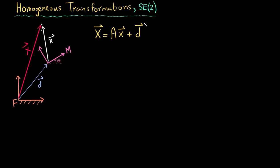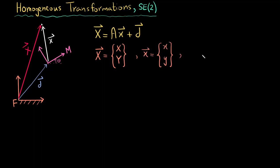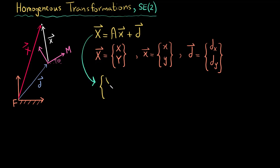In the previous videos we derived this equation which helps us to move from small x to big x. Writing it out more explicitly, the big x vector is (X, Y), the small x vector is a point (x, y), and the d vector is (dx, dy). Replacing these terms and expanding, we get this result.